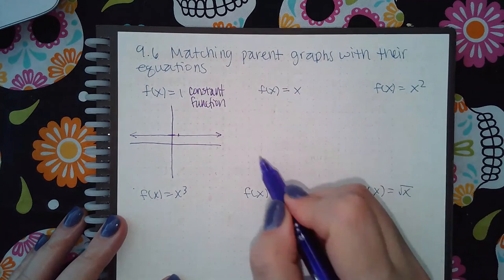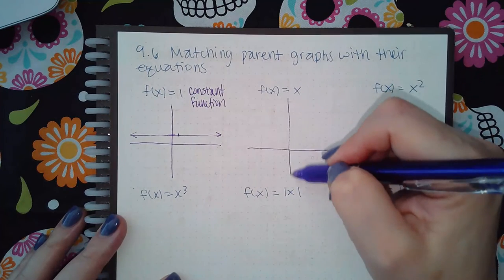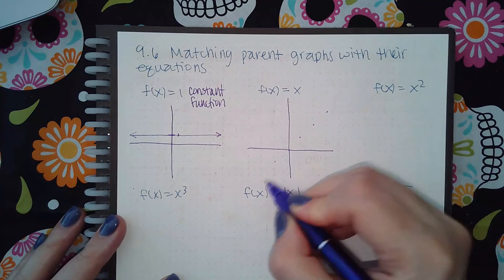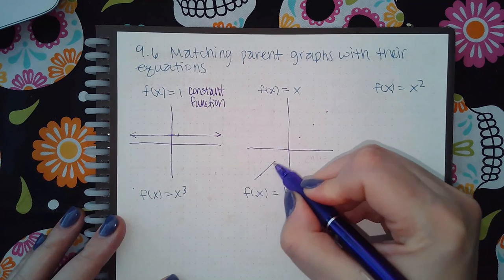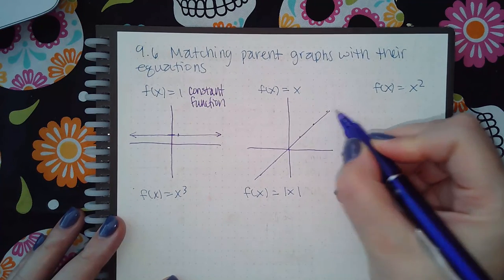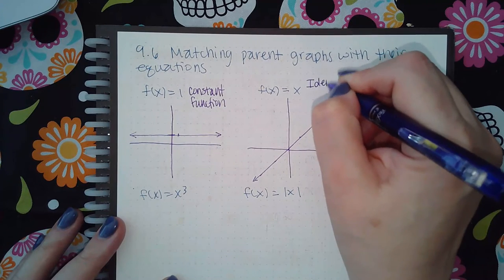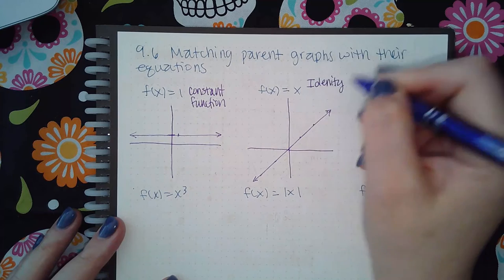This next one is f(x) equal to x, and that looks like a line, just a normal line through the origin.